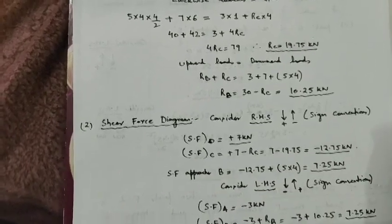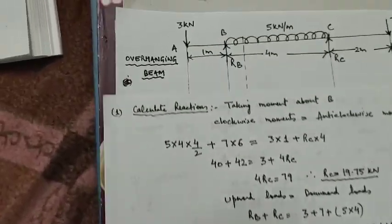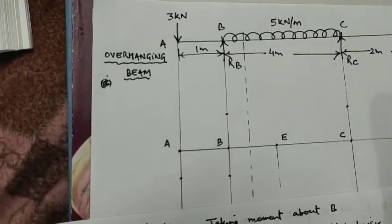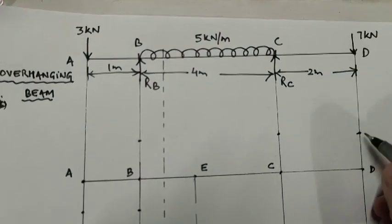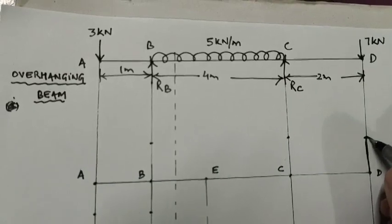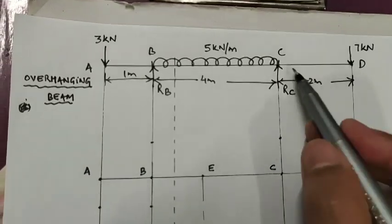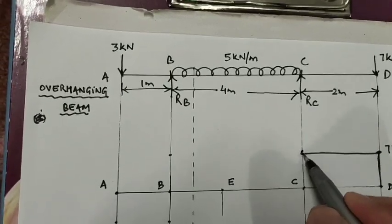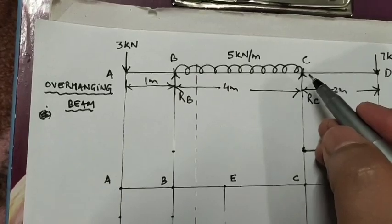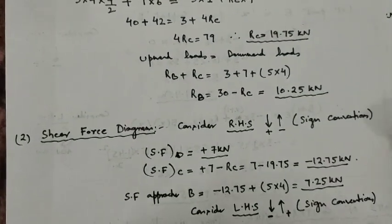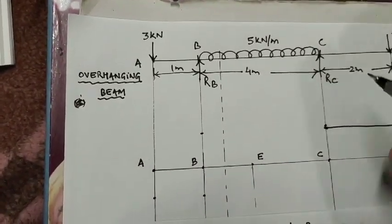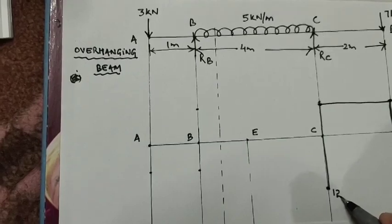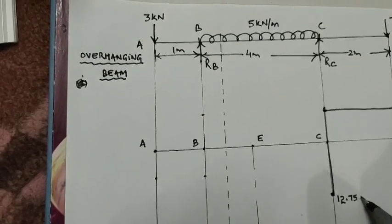After calculating all shear forces, we will now plot the shear force diagram. Starting from point D, the shear force is 7 kN — plotted as a vertical line. From D to C there is no load, so the shear force line is horizontal. At point C there is a vertical (point) load, so the shear force line drops vertically down to minus 12.75 kN.